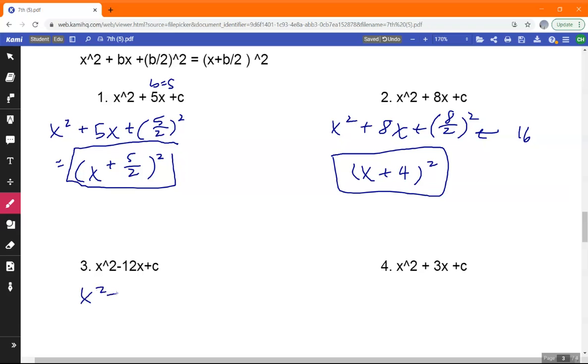x squared plus, well, it's actually minus 12x here. Minus 12x plus negative 12 over 2 squared. That is negative 6, so that'd be negative 36. We're not doing that here. x minus 6 squared.